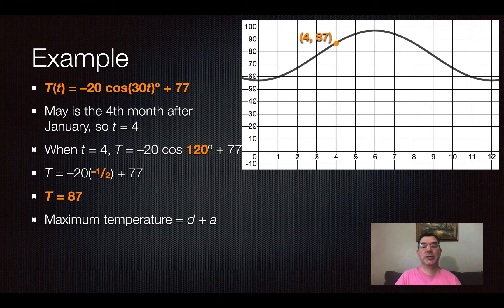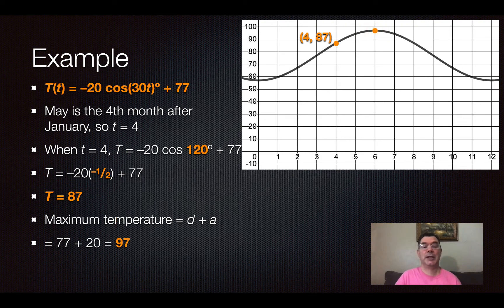Now the maximum temperature is going to be my principal axis plus my amplitude. And that is going to be 77 plus 20, which is 97.